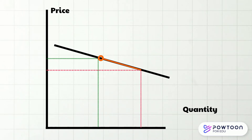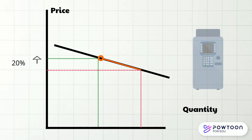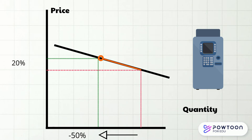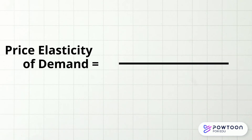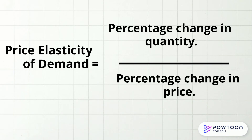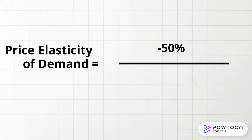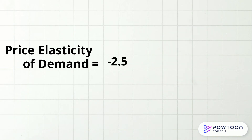To show you with a simple example how the price elasticity of demand is calculated, let us assume that a surge of 20% in vending machine prices means price goes from 50 to 60. That results in a declining demand for vending machines by 50%, from 100 to 50. The formula is: price elasticity of demand equals percentage change in quantity divided by the percentage change in price. So we divide -50 by 20, and we get -2.5.